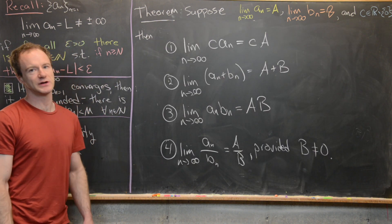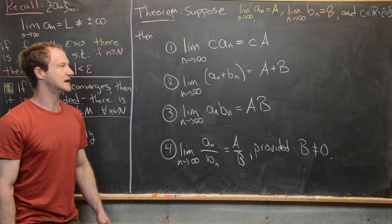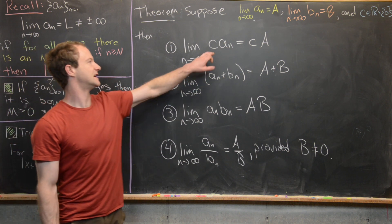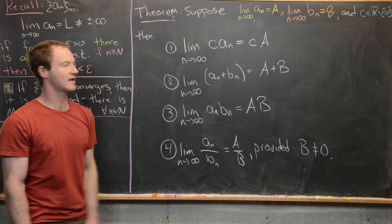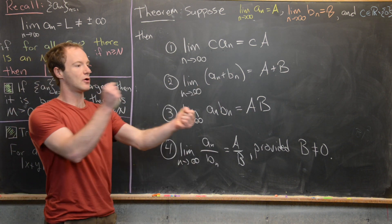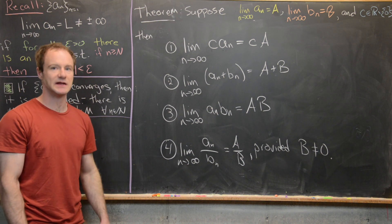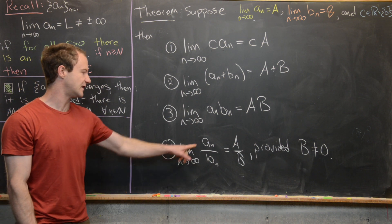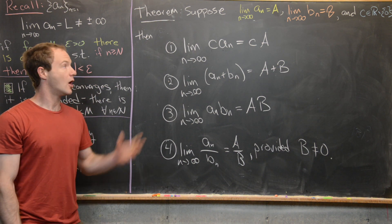To summarize: if aₙ → a, bₙ → b, and c is a nonzero real number, then: (1) lim(c·aₙ) = c·a — you can factor the constant out of the limit; (2) lim(aₙ + bₙ) = a + b — the limit distributes over addition; (3) lim(aₙ·bₙ) = a·b — the limit distributes over multiplication; (4) lim(aₙ/bₙ) = a/b, provided b ≠ 0.